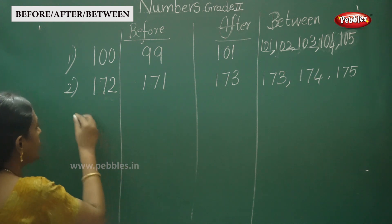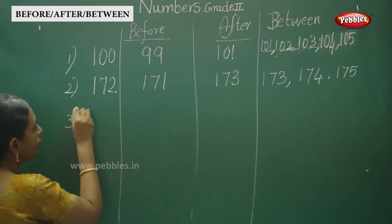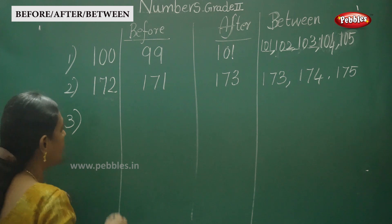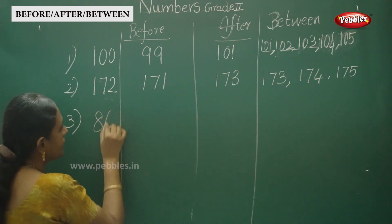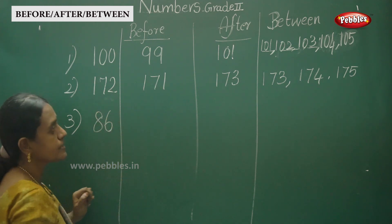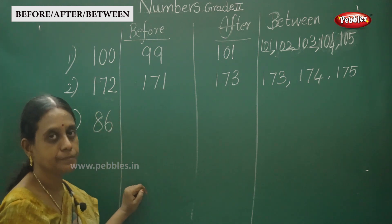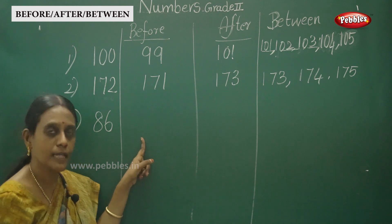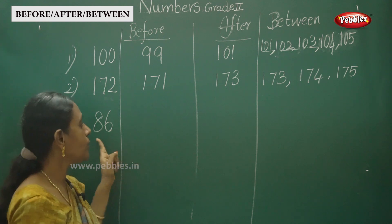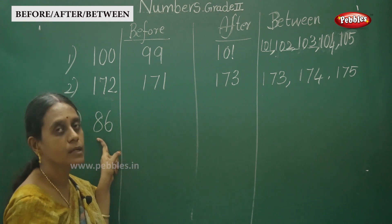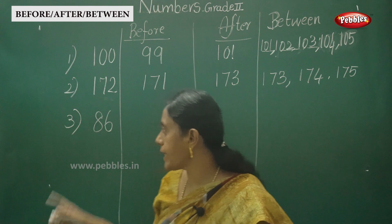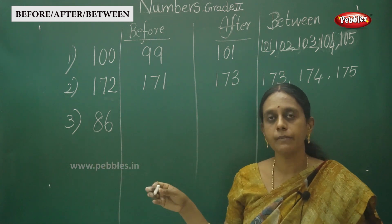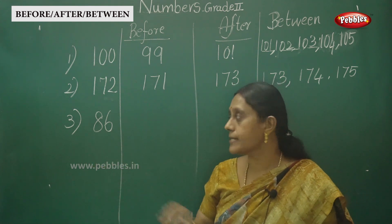One more example for a two-digit number. That is 86. This is easy, children. From which number do you start? You have to start counting from 80: 80, 81, 82... up to 86.